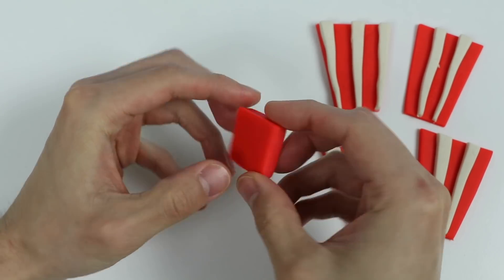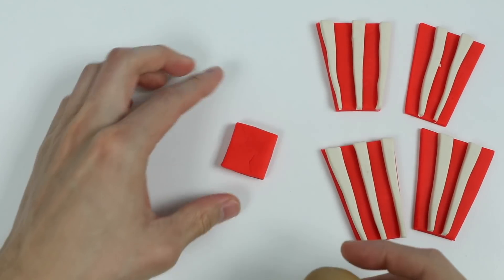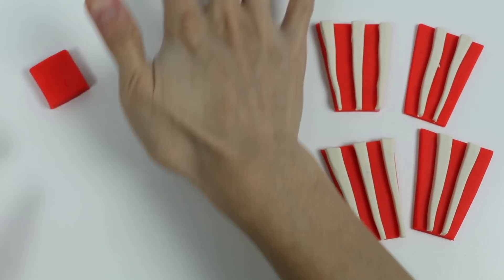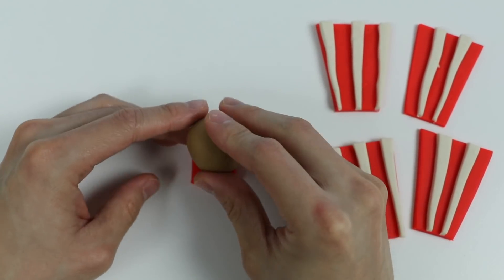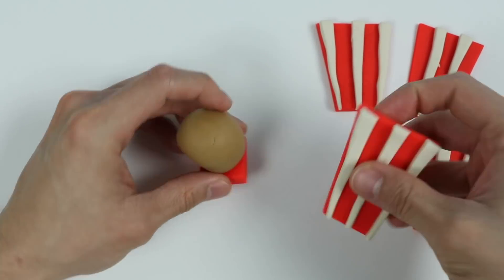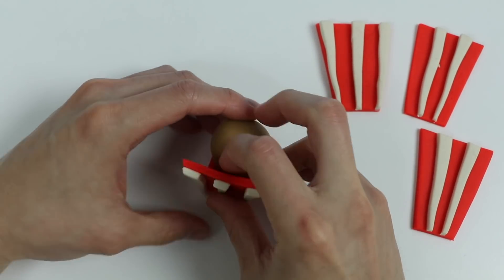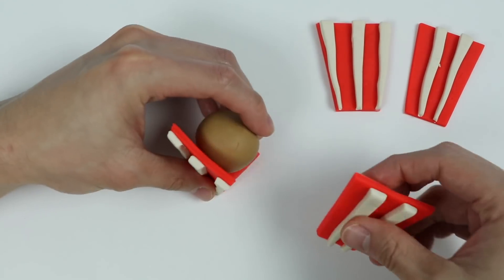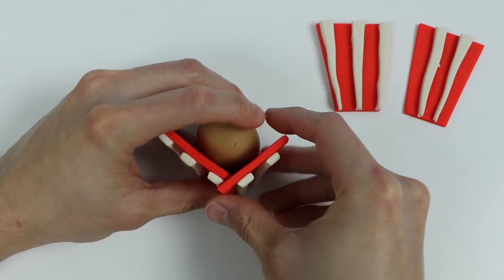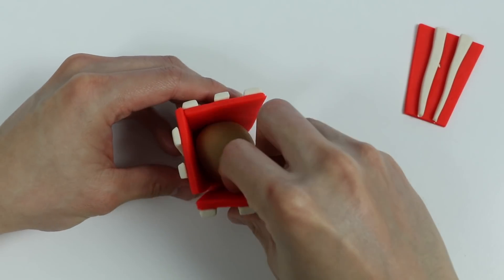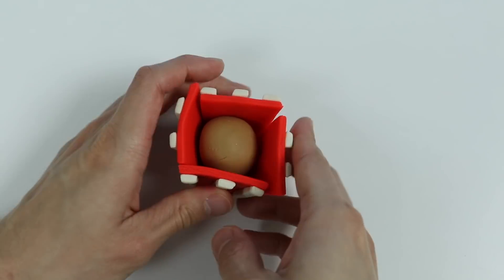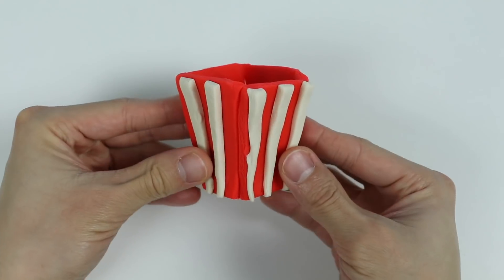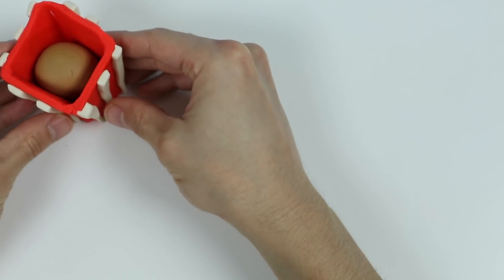Now we need something to keep all the sides up. Let's use this brown Play-Doh. Make a cylinder-like shape. Now let's attach all the sides. Perfect! Here's our movie popcorn bucket.